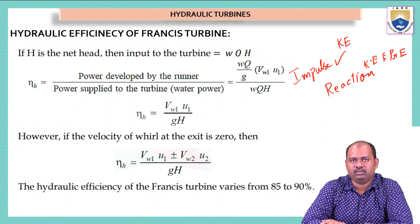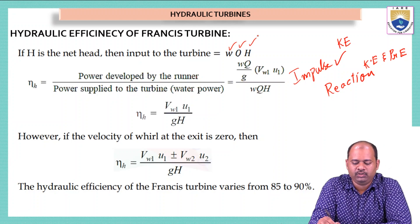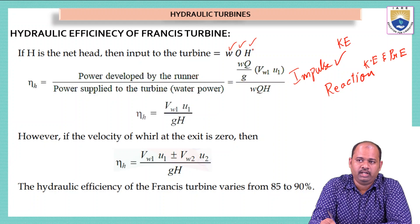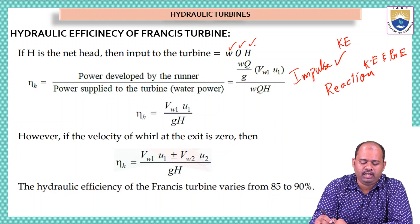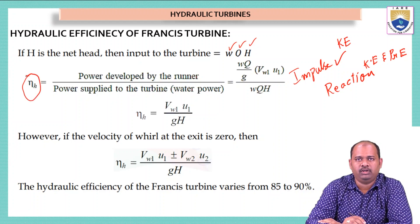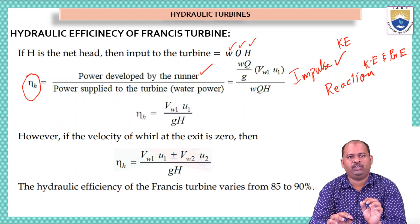If capital H is the net head, then the input of the turbine is equal to W×Q×H, where W is the weight of the water, Q is the discharge of water coming out of the turbine, and H is the net head of the turbine. When we calculate efficiency, hydraulic efficiency is equal to power developed by the runner divided by power supplied to the turbine. We have two types of powers, and using these we can calculate the hydraulic efficiency.